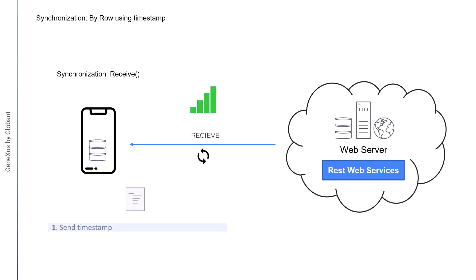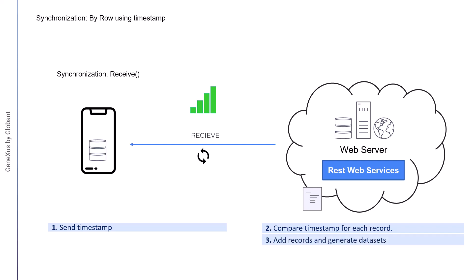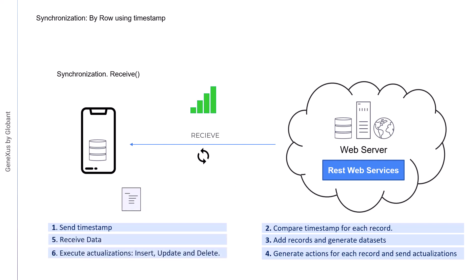In every new synchronization, the device sends the timestamp of the last synchronization. The server compares the timestamp received from the device with that of each record using the attribute of each table. All the records that have been added or inserted after the timestamp of the device are added to a list. To determine the action to be taken on each record, it will be evaluated whether the record was deleted using the attribute with the logical deletion mark. If so, the record is marked as a deletion that must be sent to the device, and the rest of the records are marked to be updated. In the device, an upsert will be made — if the record exists it will be updated, and otherwise it will be inserted. The device receives the data, performs the operations, and updates the timestamp.